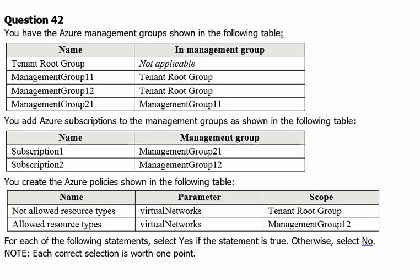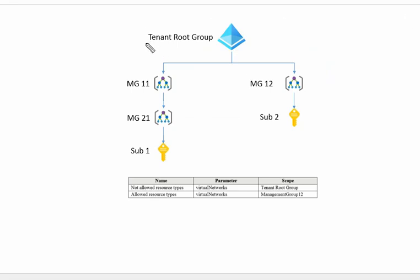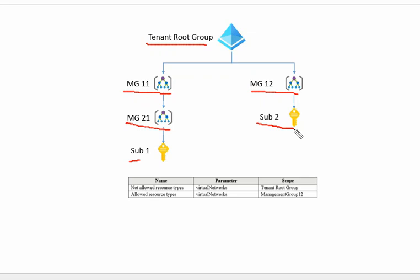Back to our question — we need a diagram to explain this scenario. We have one tenant root group containing management group 1.1. Under management group 1.1 we have management group 2.1, and under management group 2.1 we have subscription 1. We also have management group 1.2 directly under the tenant root group, containing subscription 2. The first policy — not allowed resource type: virtual networks — is applied at the top root tenant level, so no virtual networks can be created anywhere across all management groups and subscriptions.